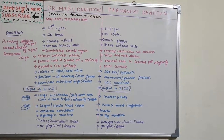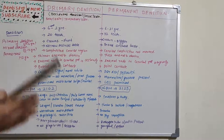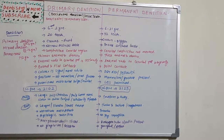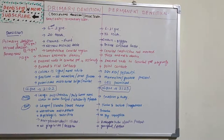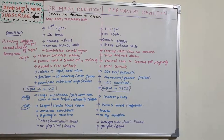Primary dentition is exclusively primary teeth, from 6 months to 6 years. By 6 years, permanent dentition starts erupting, so from 6 to 12 years the person will have both deciduous and permanent dentition — this is the mixed dentition phase. Around 12 to 13 years, most deciduous teeth are exfoliated and the person has only permanent dentition — 12 years onwards. These ages may vary person to person due to gender and individual variation.